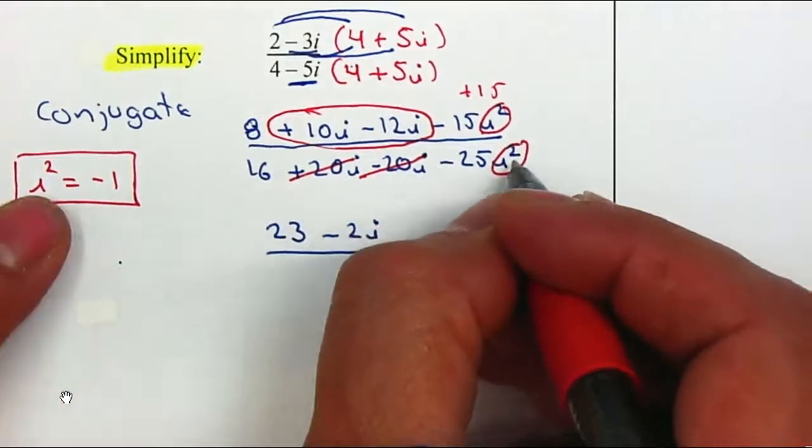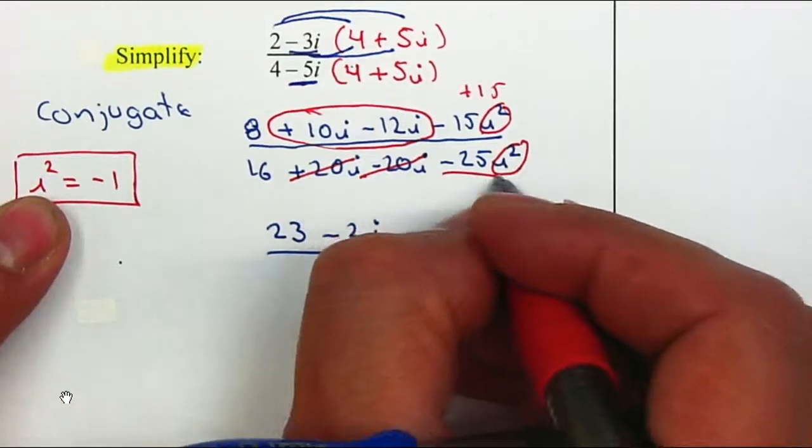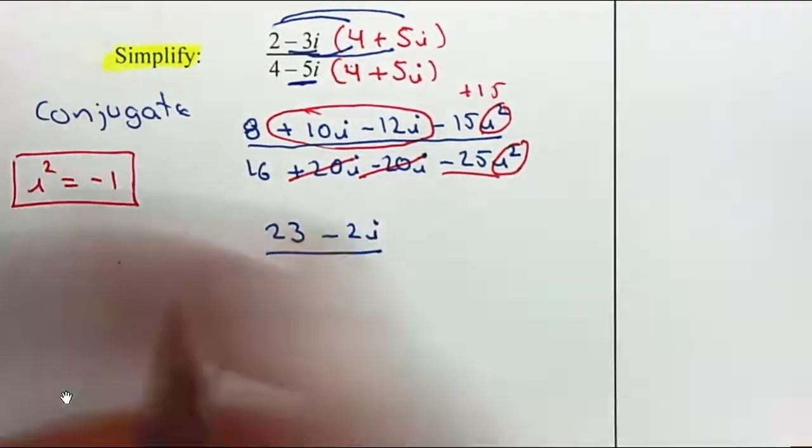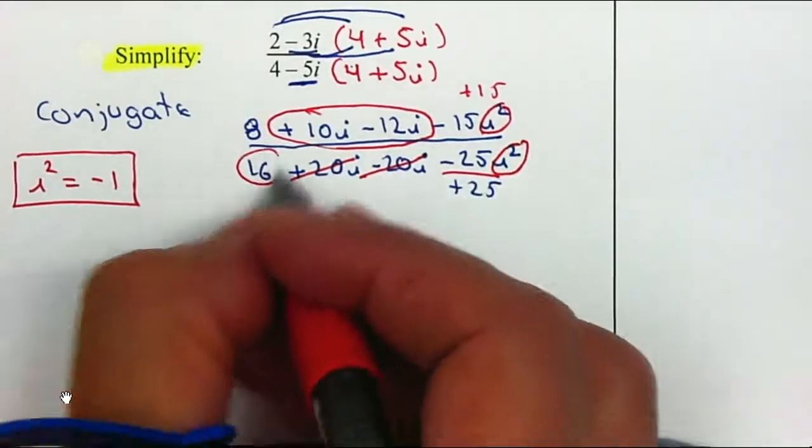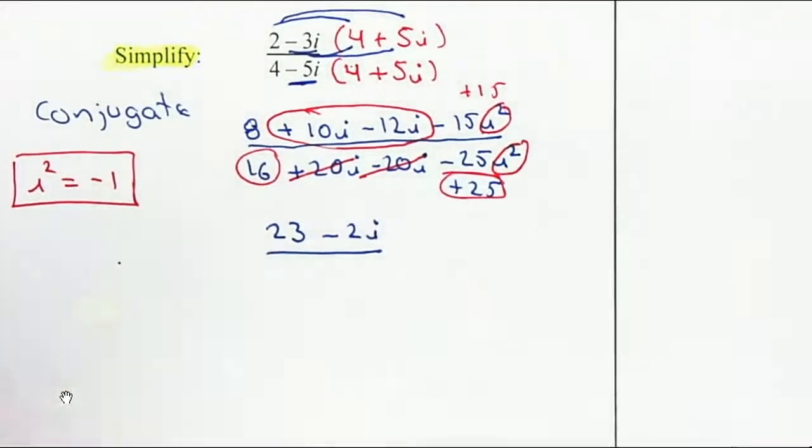i² is negative 1. So negative 1 times negative 25 gives positive 25. I'm going to combine 16 and positive 25, which gives 41.